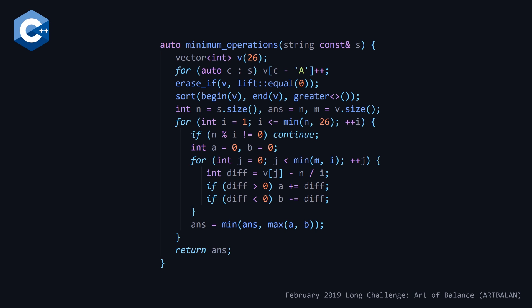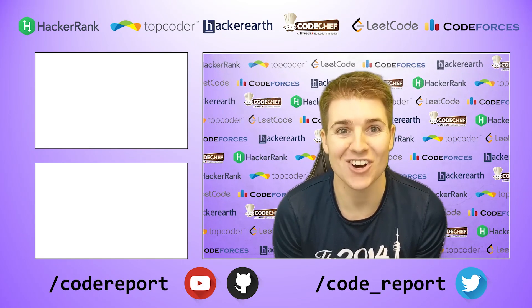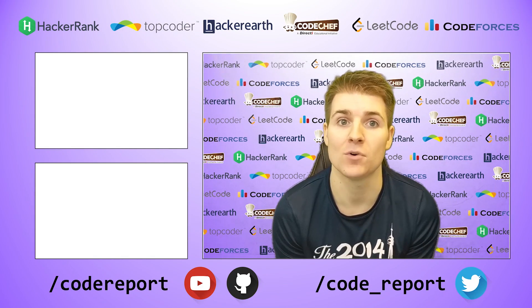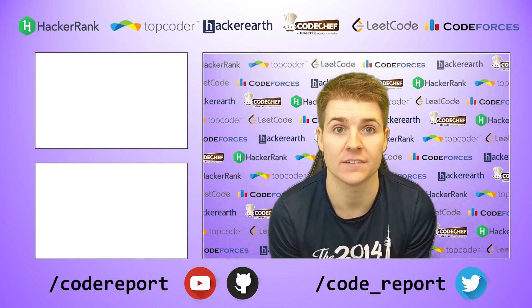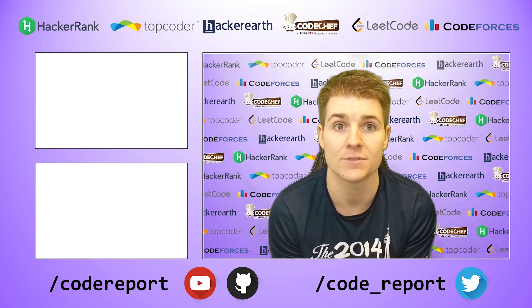The time complexity is O(T * N). Even though we sort here, it's an n log n operation on a constant-sized vector of at most 26 elements, so it's effectively O(1). The nested for loop is also bounded by the constant 26. So overall we have T test cases each requiring a linear pass through the string characters. If you enjoyed this video, hit the like button. Subscribe for more, follow me on Twitter for reminders 30 minutes before contest start, and find all code from my videos on my GitHub page. Thanks for watching!